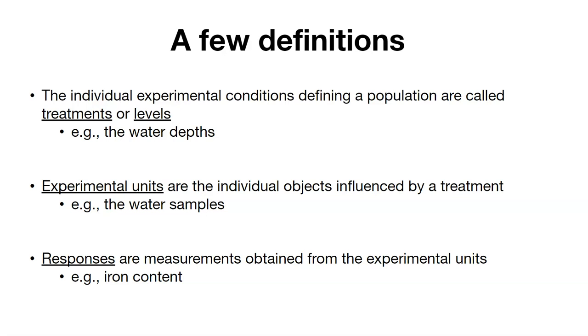Then we can say the experimental units are the individual objects that are influenced by the treatment. So in this case, we can think about them as being the water samples. We have three different water samples collected at each water depth.